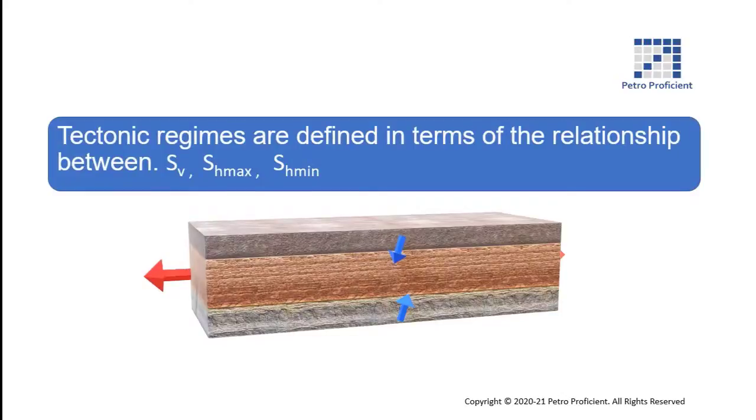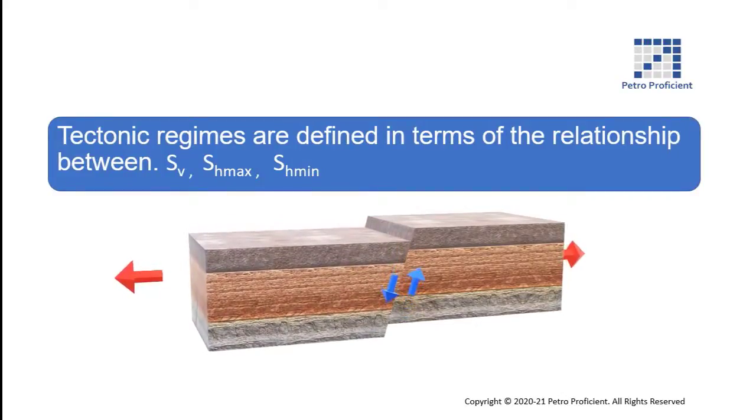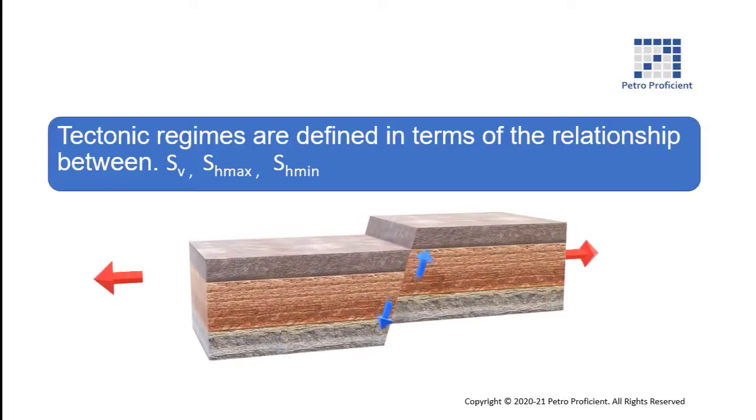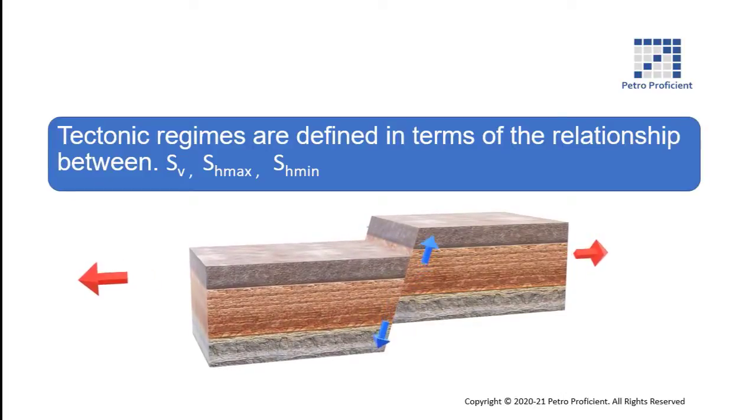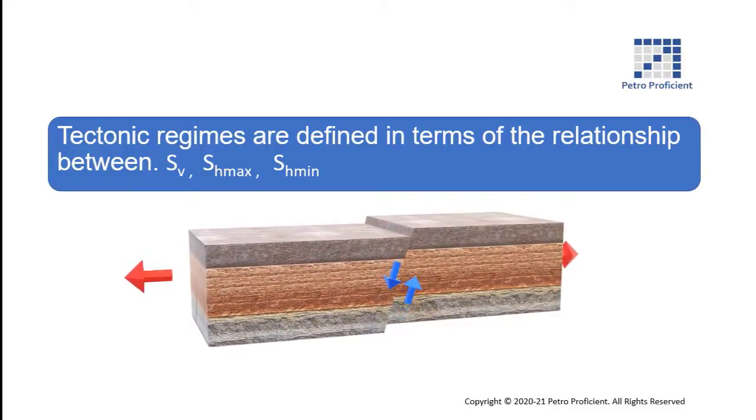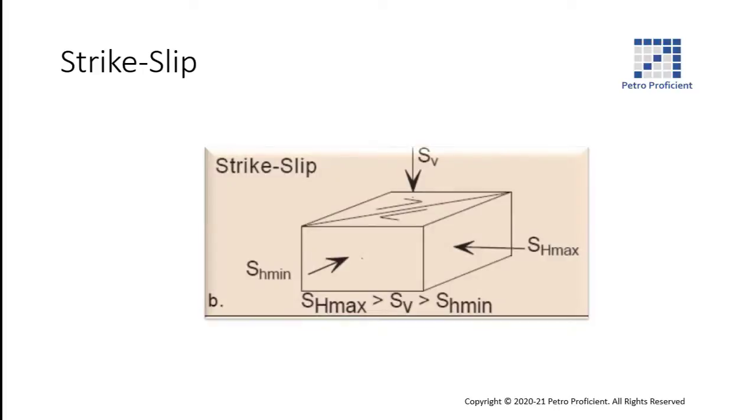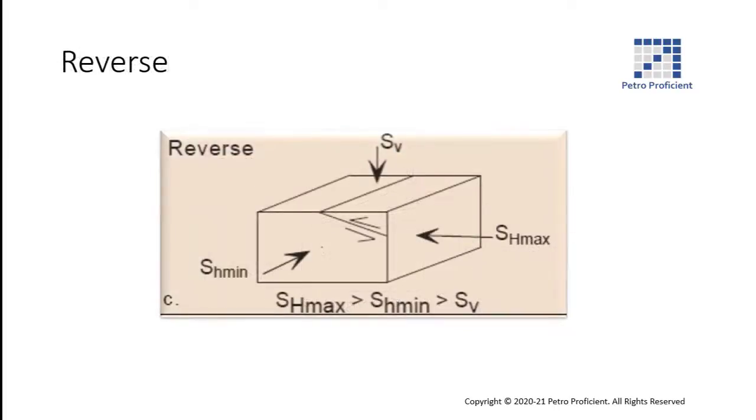Tectonic regimes are defined in terms of the relationship between SV, SH maximum, and SH minimum. The regimes are generally classified into three major categories. The first category is normal faulting. The second category with more compressive stress state is strike-slip faulting. The third category with most compressive stress state is reverse faulting.